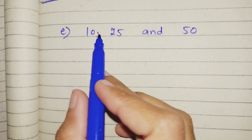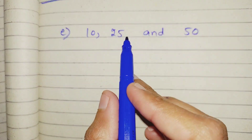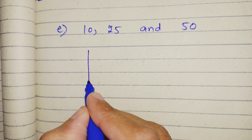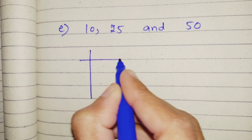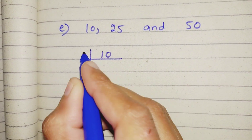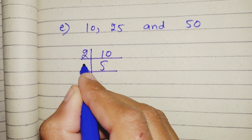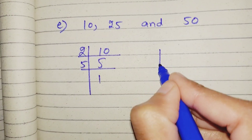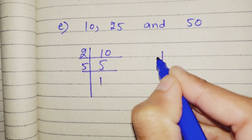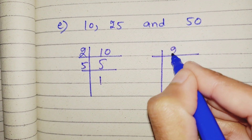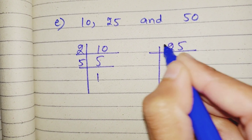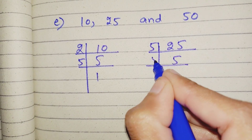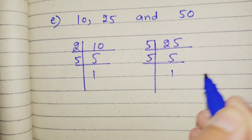LCM of 10, 25 and 50. 10: 2 5s are 10, 5 1s are 5. So 10 = 2 × 5. 25: 5 5s are 25, 5 1s are 5. So 25 = 5 × 5.